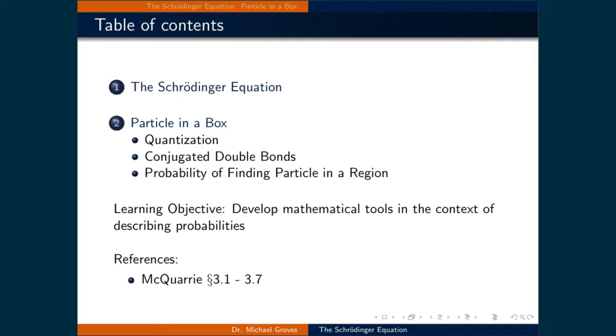This lecture is broken down into two parts. The first part introduces the Schrödinger equation, while the second part applies it to the particle-in-a-box problem. By looking at this problem, we can practice calculating some important quantum mechanical properties and even apply it to conjugated double bonds to get a reasonable estimation of their emission spectra.